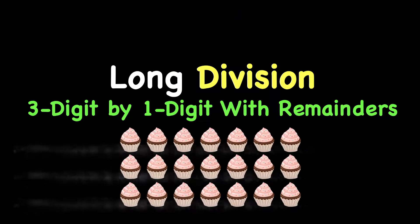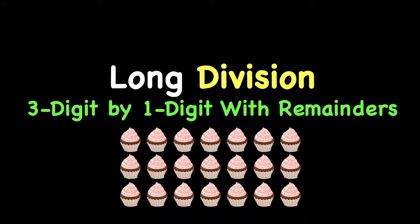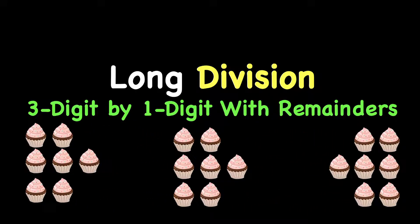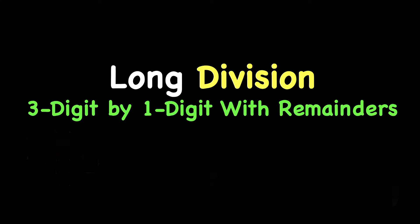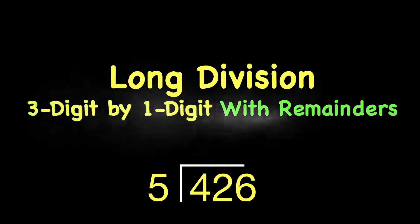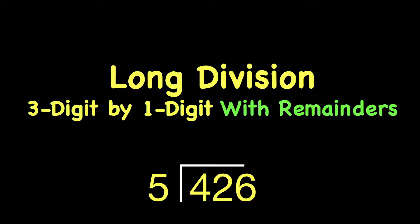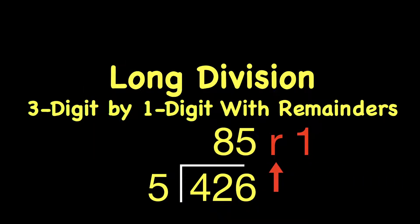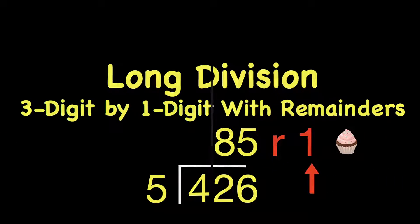Division is when you have a greater number and you want to take that greater number and divide it into smaller but equal groups. In this case, three equal groups. Long division is when we are using the long division brackets to show our work. Three digit by one digit means that we are dividing three digit numbers by one digit numbers. And with remainders means that sometimes you will have numbers that are left over when you do a problem.